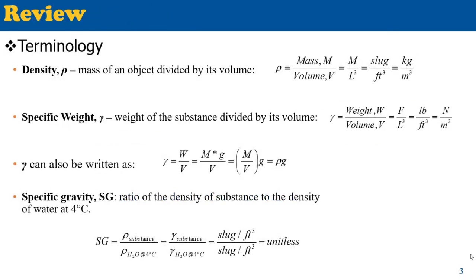Before we start and show you the derivation and the demonstration, let's review some of the scientific terms we're going to use for this test. We need to know density, specific weight, and specific gravity. Specific gravity is the ratio of the density of a substance to the density of water at 4 degrees Celsius, because water has its maximum density at 4 degrees Celsius, which is 1000 kilograms per meter cubed.